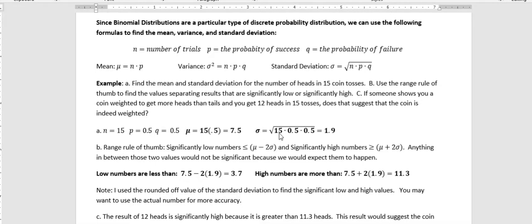And the standard deviation is the number of tosses n times the probability of success times the probability of failure, which is 1.9. And it's not exactly 1.9, but I rounded it to one place.